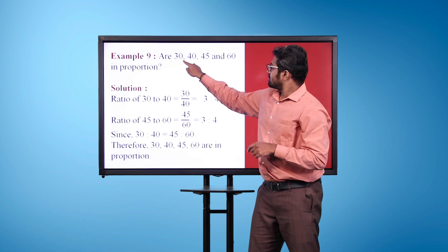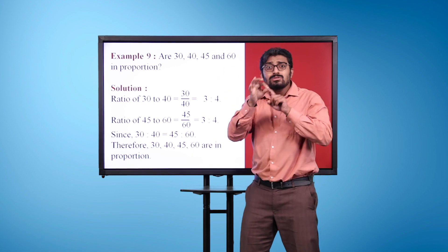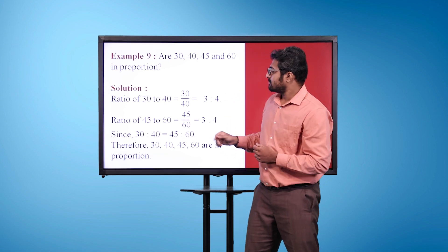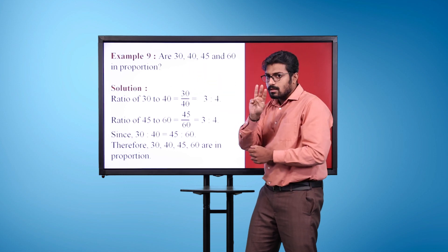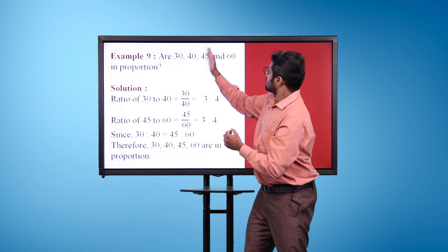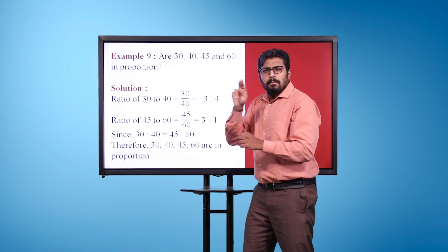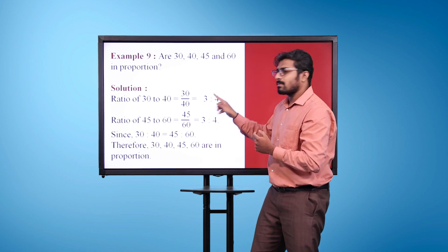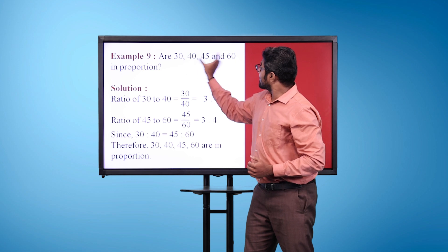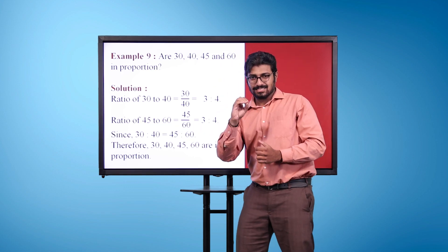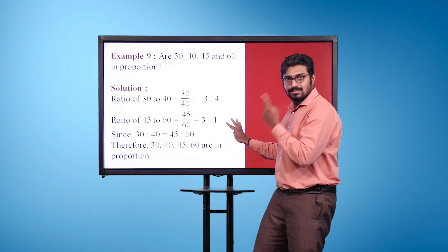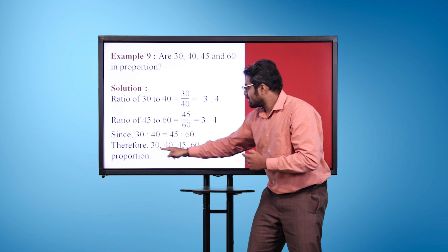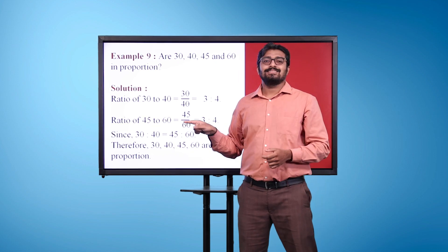Example 9: Are 30, 40, 45, and 60 in proportion? Solution: Ratio of 30 to 40 is equal to 30 upon 40, which is equal to 3 is to 4. Ratio of 45 to 60 is equal to 45 upon 60, which is equal to 3 is to 4. Since 30 is to 40 is equal to 45 is to 60, therefore 30, 40, 45, and 60 are in proportion.